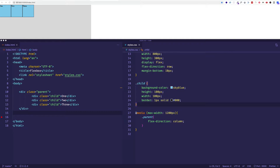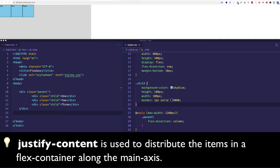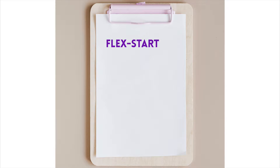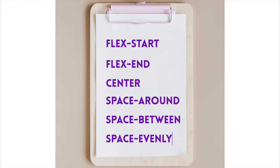The whole idea of justify-content is to distribute the container's items along the main axis. Flexbox gives us six different ways to do this, and those are flex-start, flex-end, center, space-around, space-between, and space-evenly. So let's take a look at each of them and see what they do.